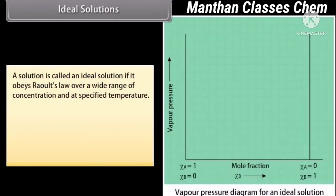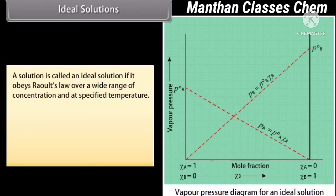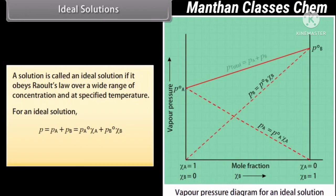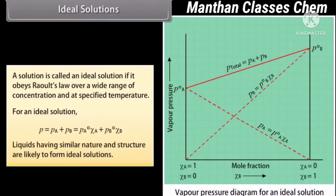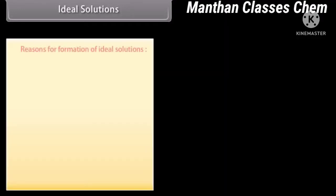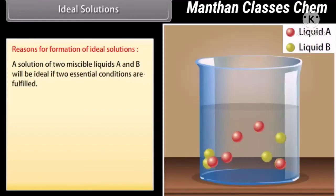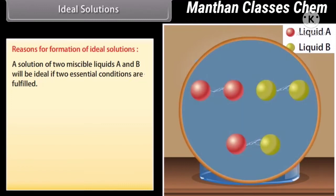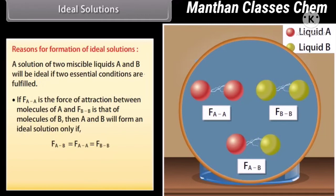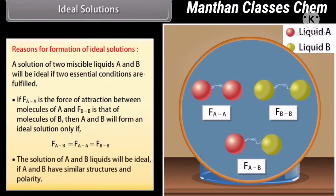Ideal Solutions: A solution is called an ideal solution if it obeys Raoult's law over a wide range of concentration and at a specified temperature. For an ideal solution, P = Pa + Pb = P°A × XA + P°B × XB. Liquids having similar nature and structure are likely to form ideal solutions, for example a mixture of methanol and ethanol. A solution of two miscible liquids A and B will be ideal if the force of attraction between molecules of A and B equals the force of attraction within molecules of A and within molecules of B, and if A and B have similar structures and polarity.